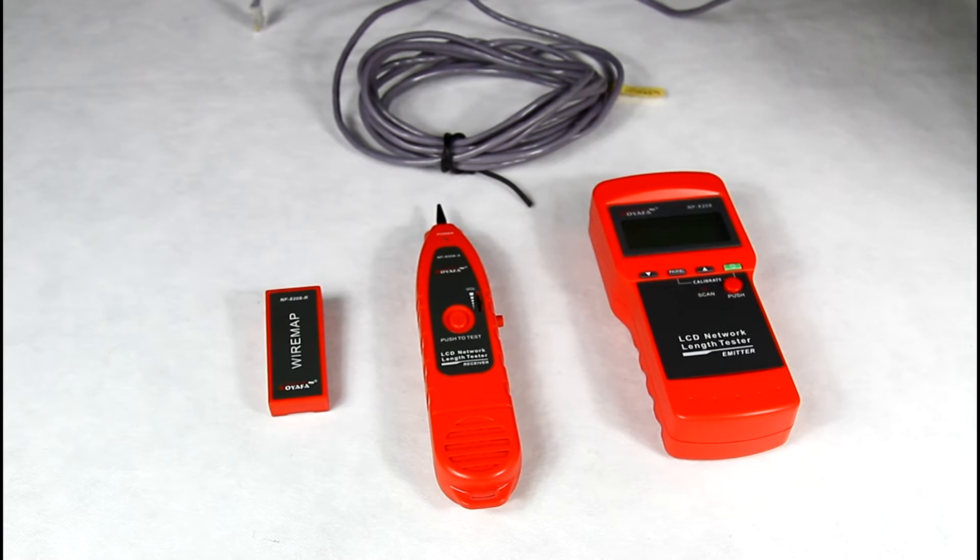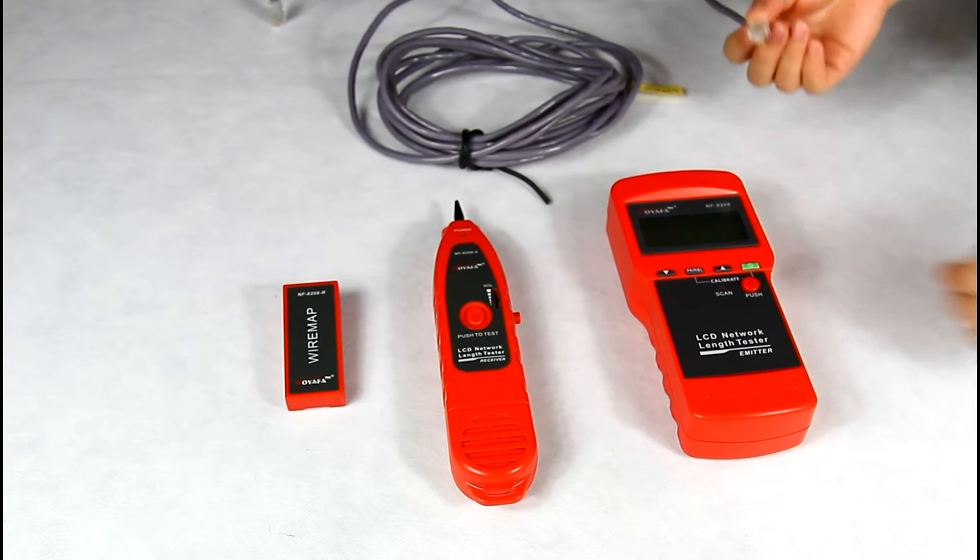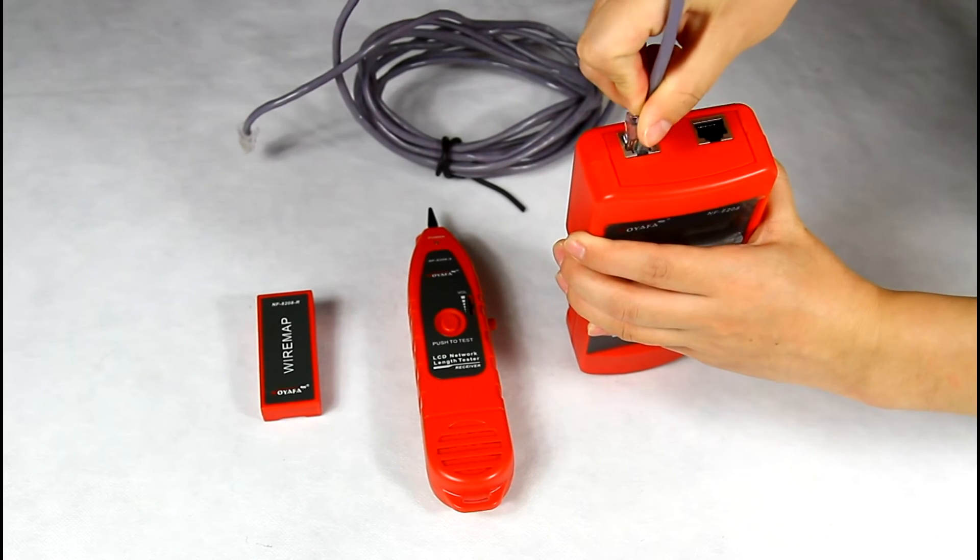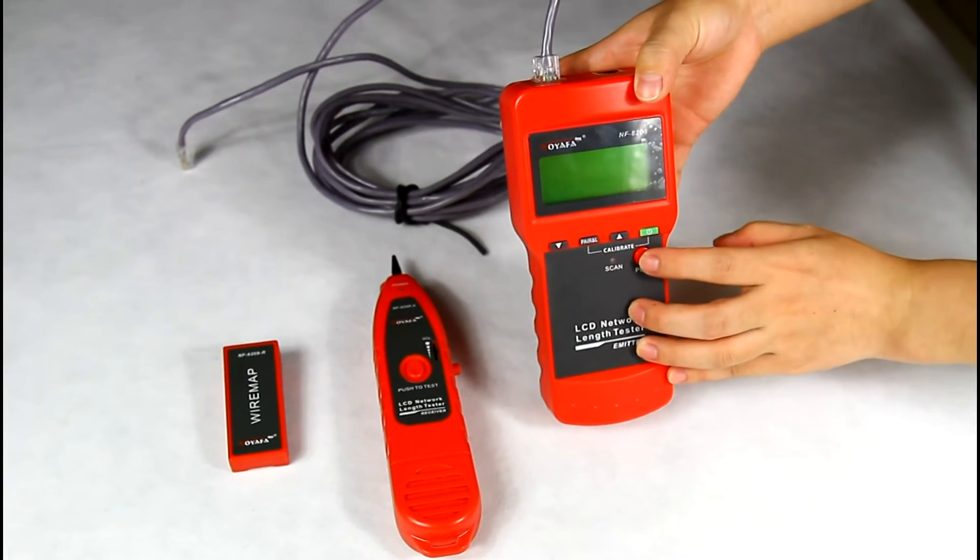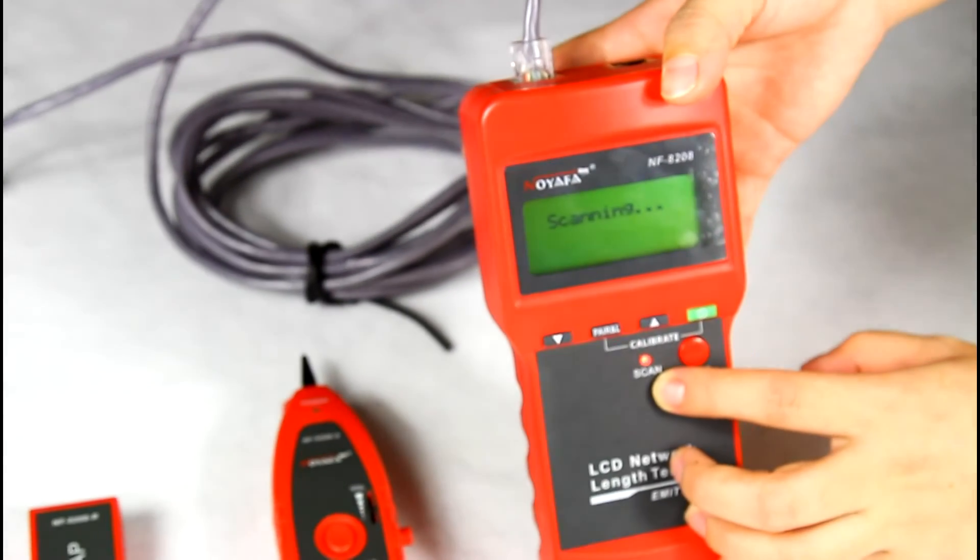Then, let me tell you how to trace network cable. Firstly, plug one end of cable into the loopback port of the master. And press the push button. You can see the scan LEDs keep flashing.